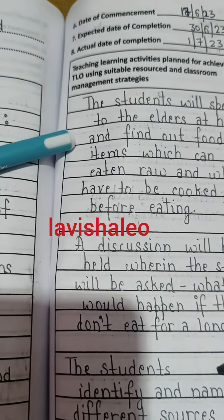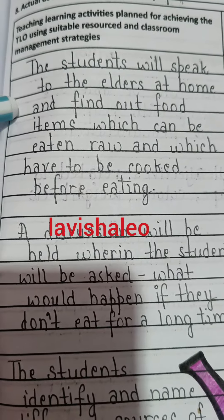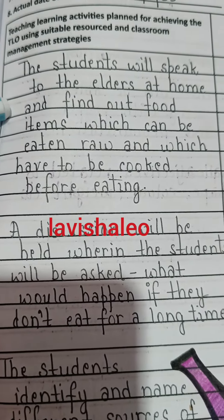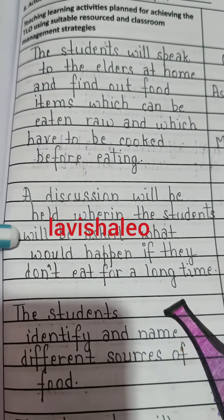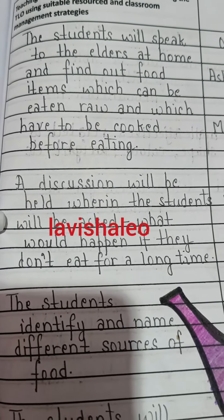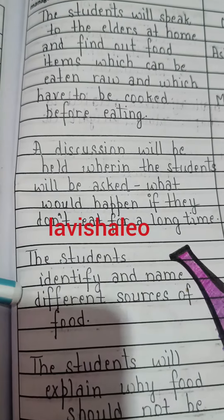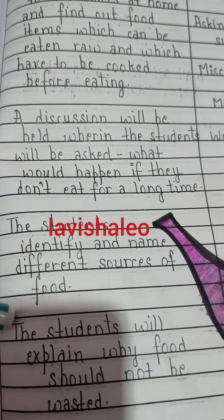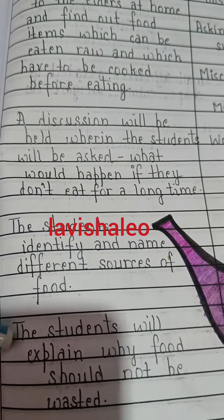These are the activities planned. First, the students will speak to the elders at home and find out which food items can be eaten raw and which have to be cooked before eating. Second, a discussion will be held wherein the students will be asked what would happen if they don't eat for a long time. Third, the students will identify and name different sources of food. And fifth, the students will explain why food should not be wasted.